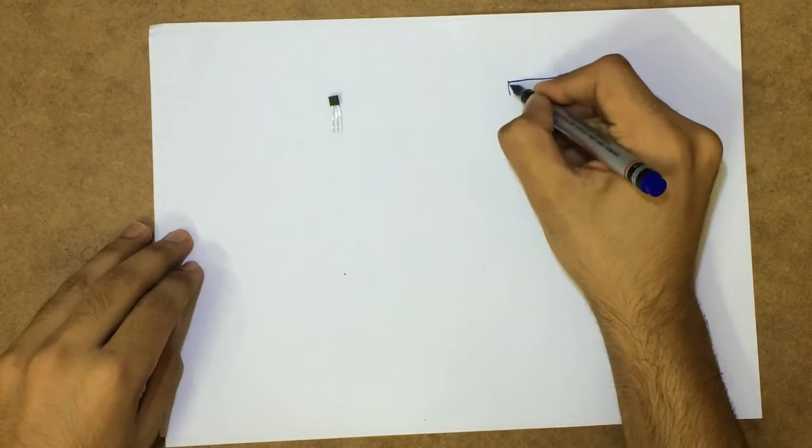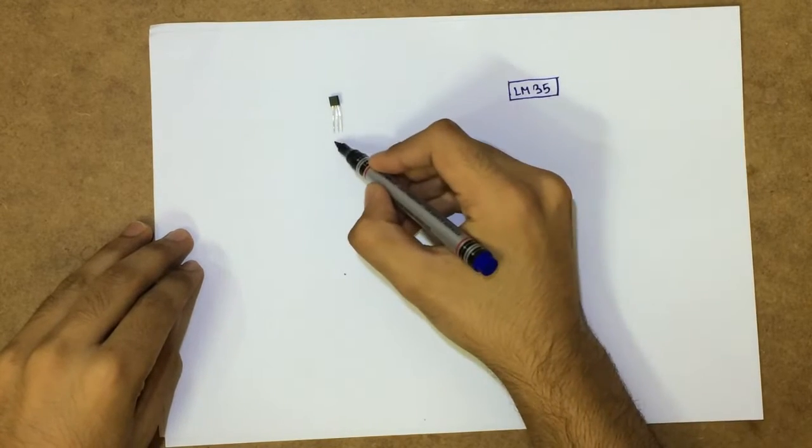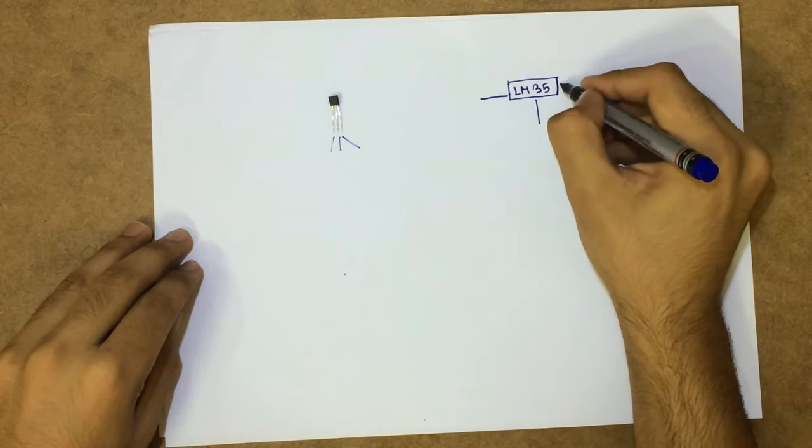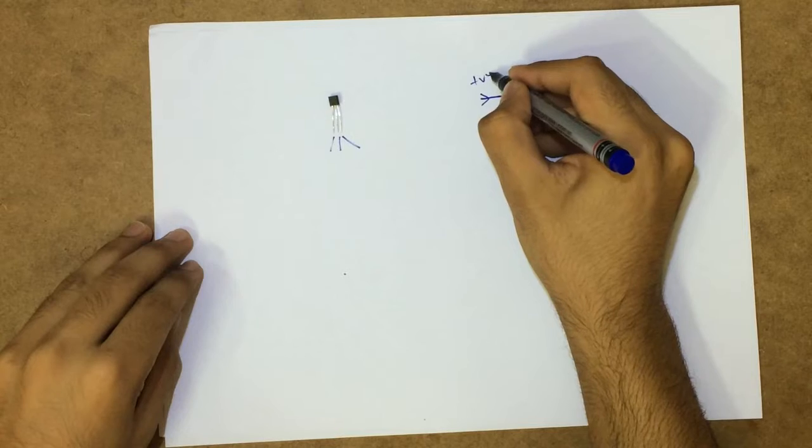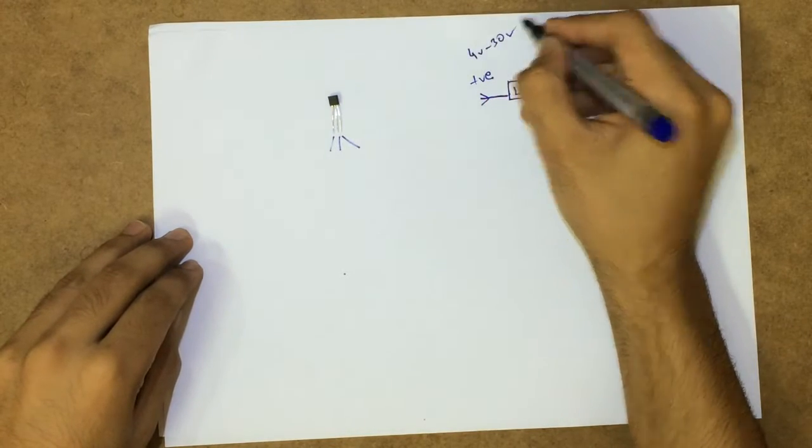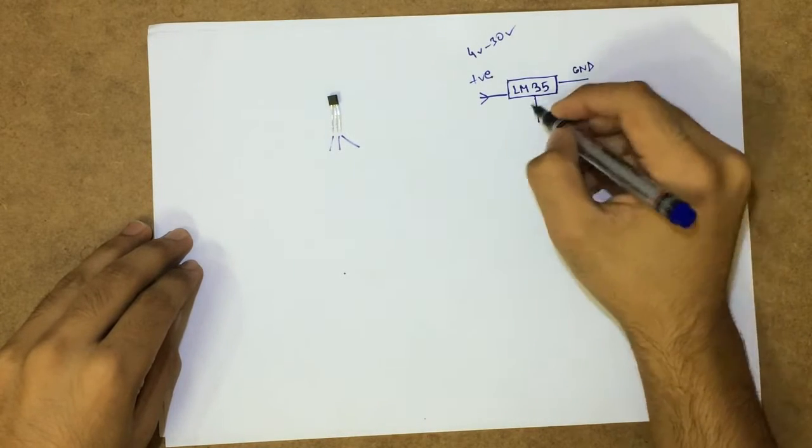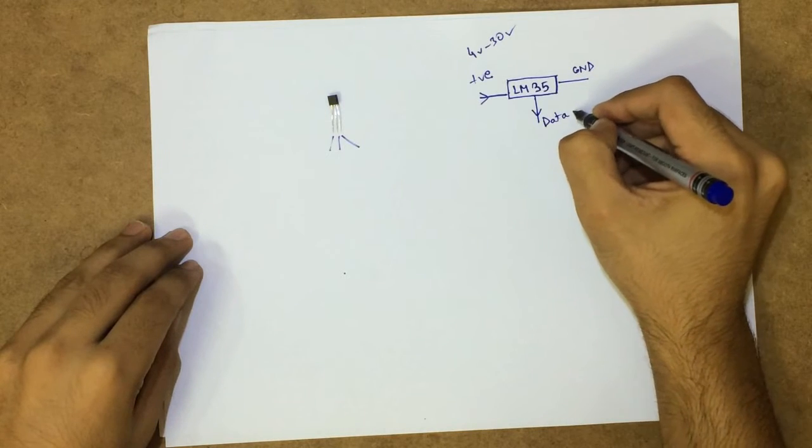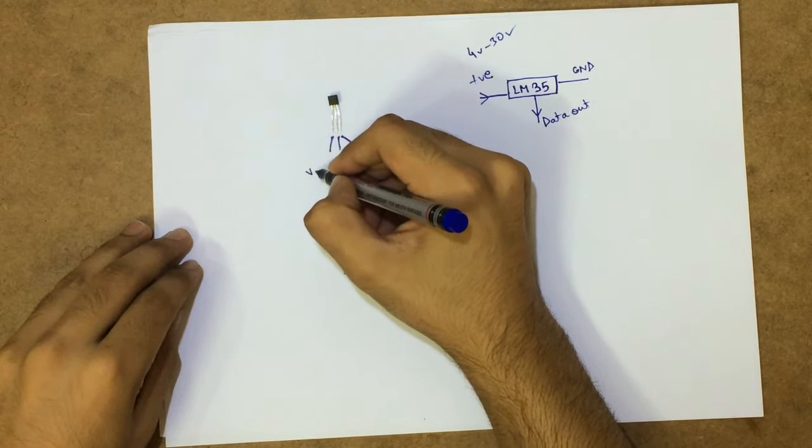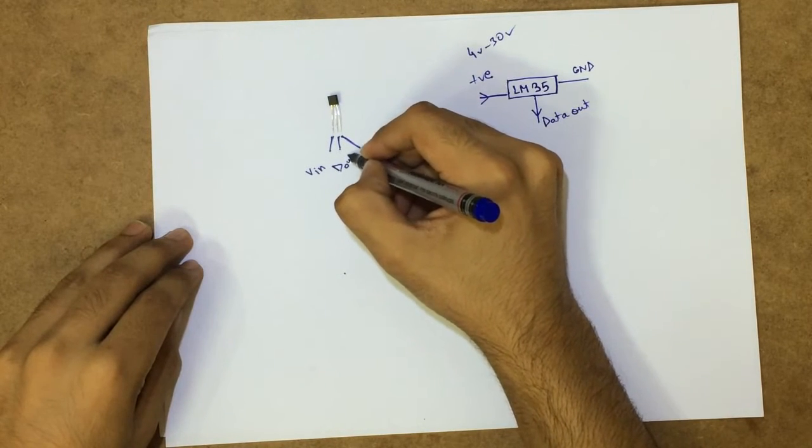So when I draw this sensor here, as you can see we have three terminals here. We have a positive voltage supply from 4V to 30V anywhere. And this is the ground pin. And this is the data out pin. So if we see this one, we have got the voltage input, the data output, and the ground.